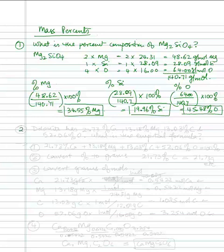Now we will take a problem where we actually have to calculate the formula from percent. Here's the problem: Dolomite has 21.73% calcium, 13.18% magnesium, 13.03% carbon, and 52.06% oxygen. What is the empirical formula? Remember, the empirical formula is the lowest mole ratio of all the elements.